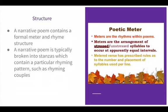Narrative poems contain a formal meter and rhyme structure. A narrative poem is typically broken into stanzas which contain a particular rhyming pattern such as rhyming couplets. Now remember, poetic meter refers to the rhythm within a poem, and meters are the arrangement of stressed and unstressed syllables which occur at equal intervals like when you're speaking. So metered verse has prescribed rules as to the number and placement of syllables used per line. So in narrative poems we have metered verse.